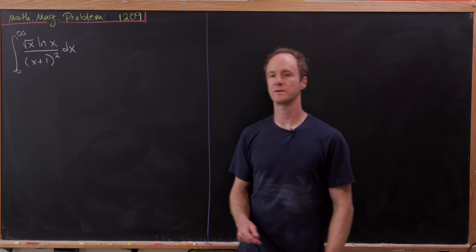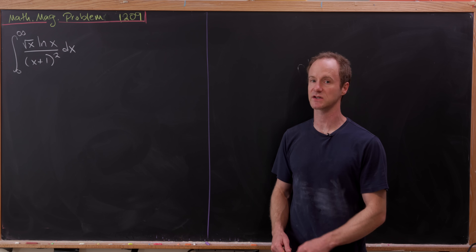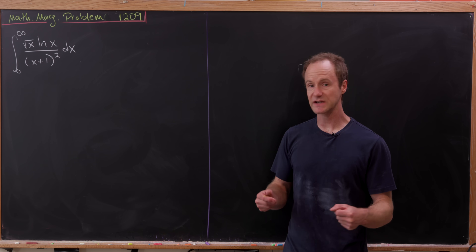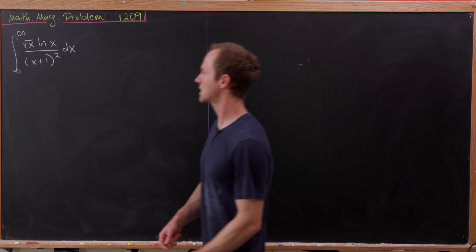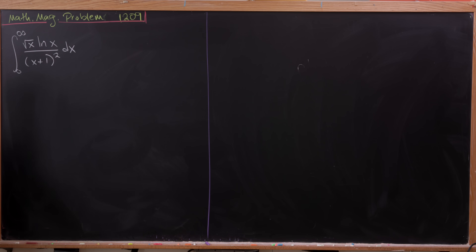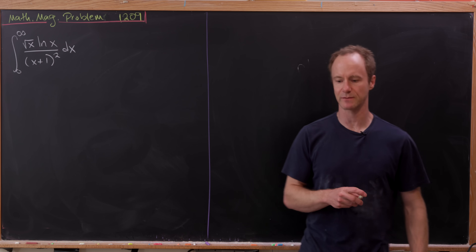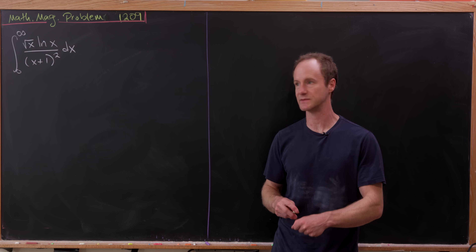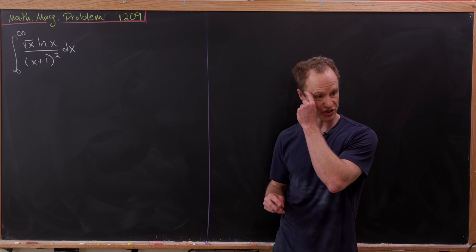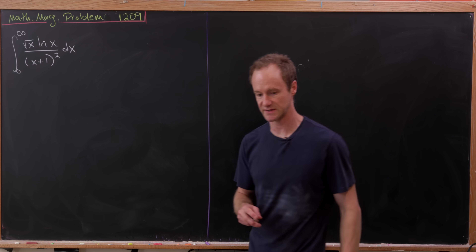We've got the integral from zero to infinity of the square root of x times the natural log of x, over (x+1) all squared. We're going to start here with an integration by parts. Recall that whenever you use integration by parts, you generally want to split this into something that becomes easier under differentiation and then something that you can just integrate in the first place.